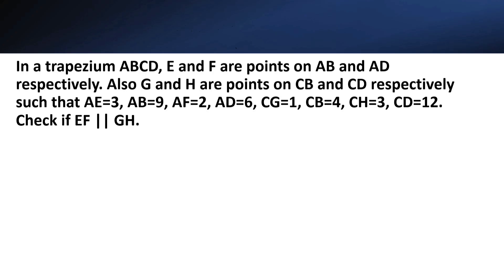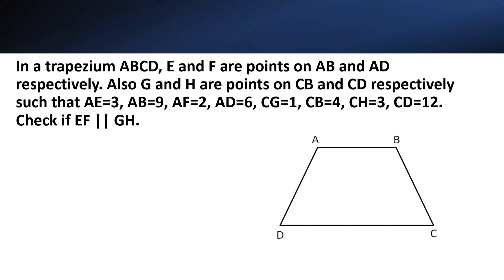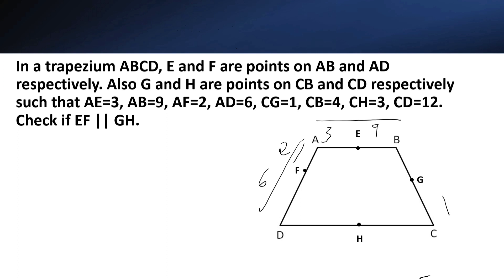In a trapezium ABCD, E and F are the points on AB and AD respectively. Also G and H are the points on CB and CD respectively, such that AE = 3 units, AB = 9 units, AF = 2 units, AD = 6 units, CG = 1 unit, CB = 4 units, CH = 3 units, and CD = 12 units.